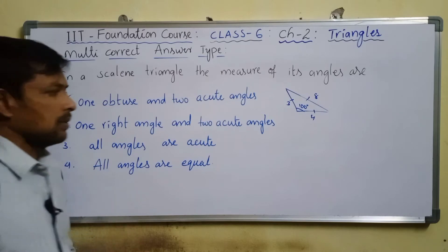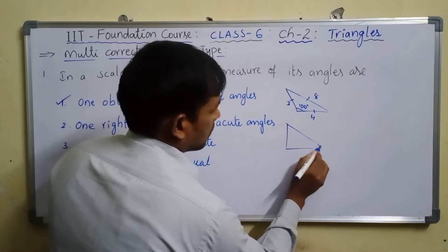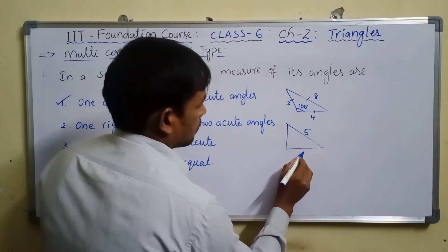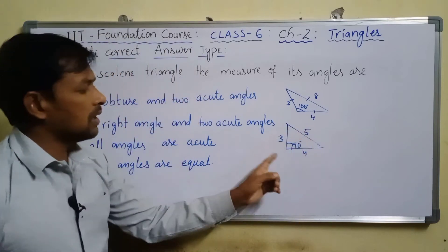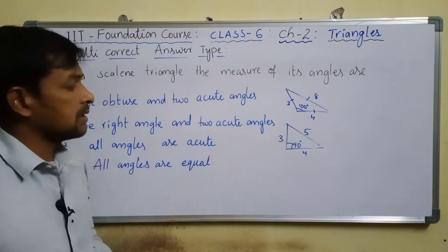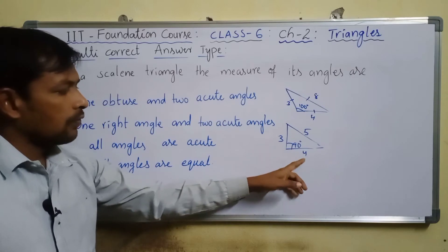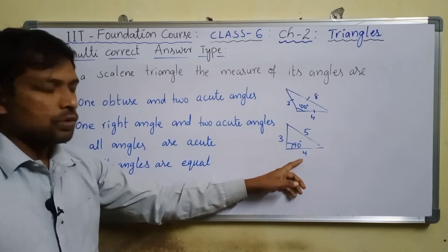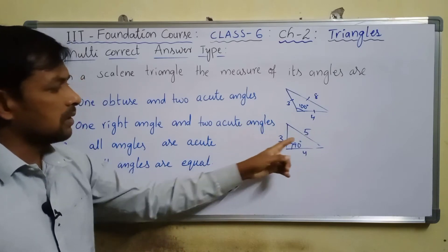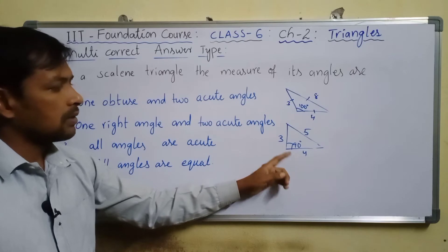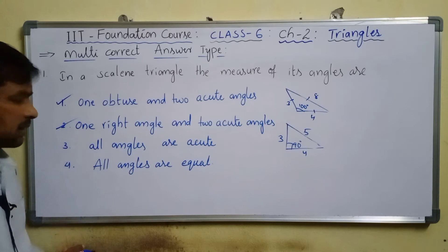For one right angle and two acute angles: according to the Pythagorean theorem, a 3-4-5 triangle — 3² = 9, 4² = 16, sum is 25, which equals 5² = 25 — is both a right angle triangle and a scalene triangle. So option two is also a correct answer.